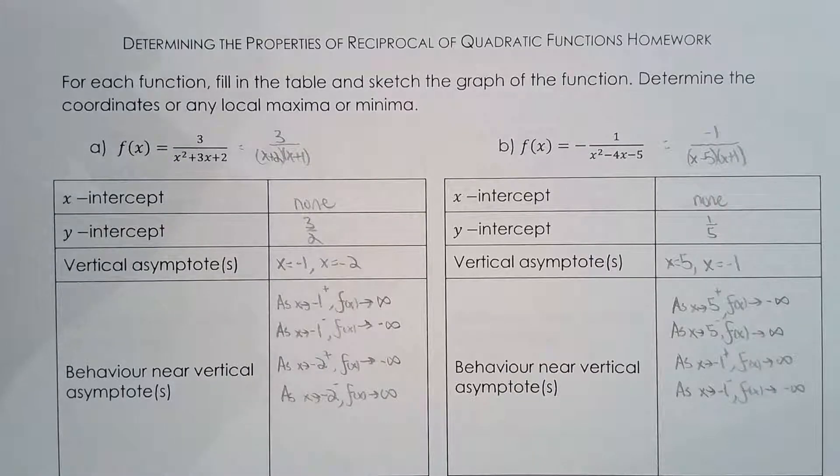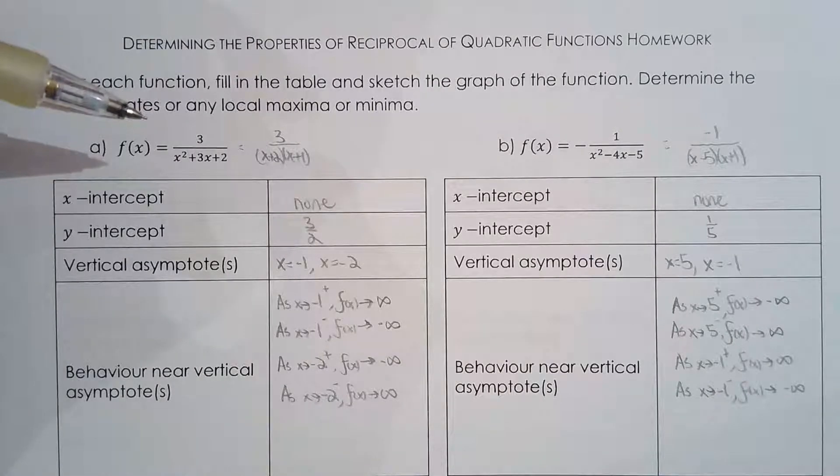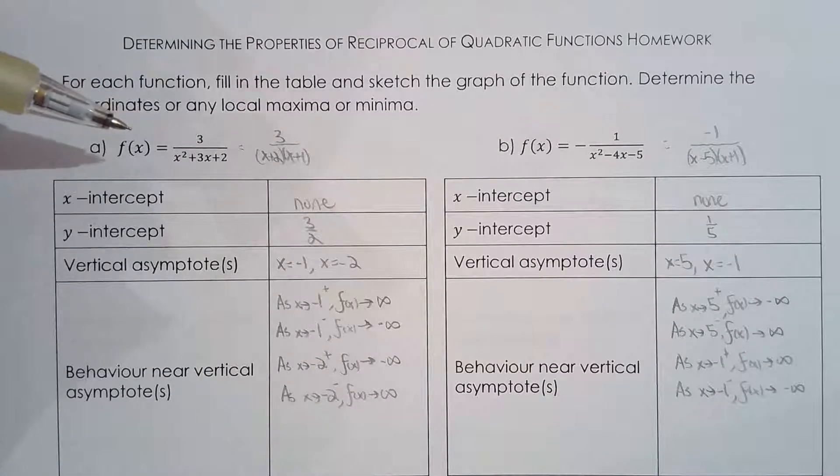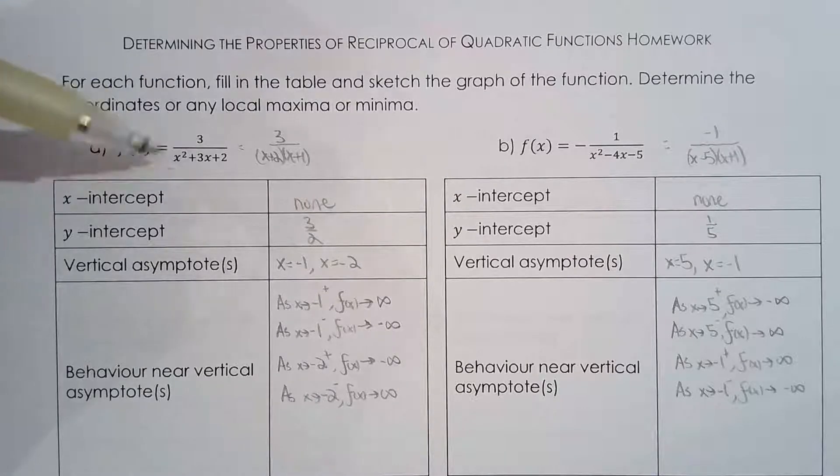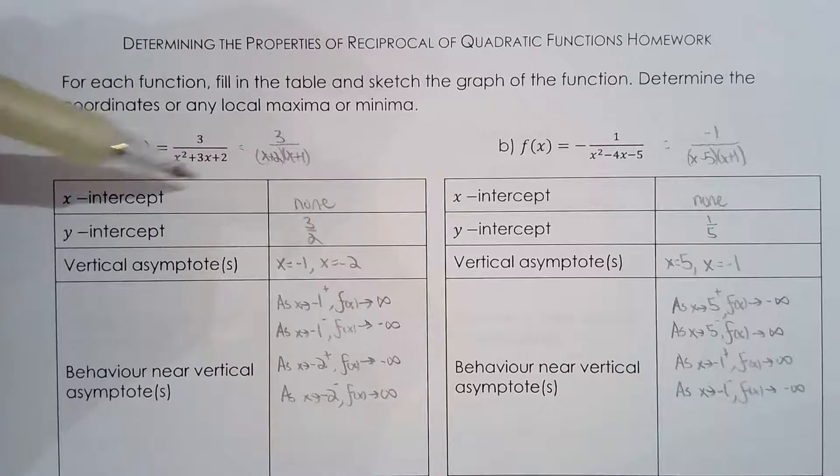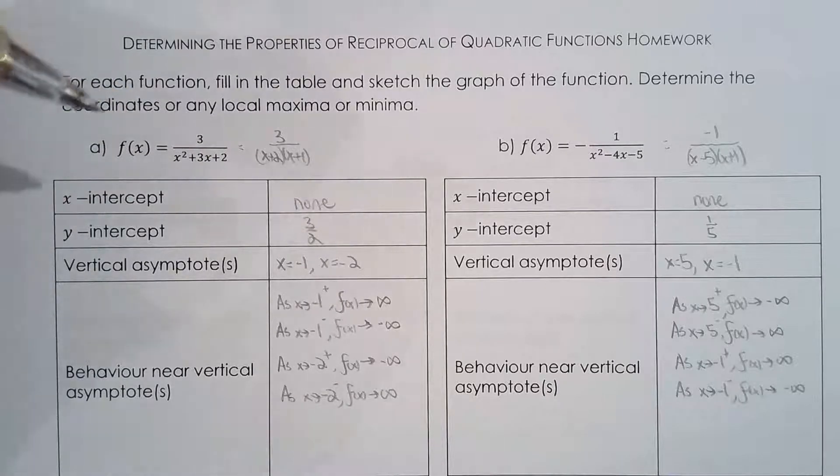In this we're taking up the second homework sheet for the reciprocal of quadratic functions. For all these questions, the very first thing I do is ask myself which scenario do I have? Do I have one vertical asymptote, two vertical asymptotes, or no vertical asymptotes? I can easily answer that question by studying the quadratic in the denominator and if you find a discriminant you can actually tell yourself which scenario you have.